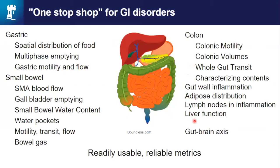As a one-stop shop, it's not just GI function — we can measure distribution in the small bowel, look at the colon, look at gut wall inflammation in Crohn's disease or in response to challenges like paracetamol. We can assess fat distribution, lymph nodes in inflammation, gut-liver function, and of course the gut-brain axis — fMRI of the brain in relationship to the gut. At the moment we're doing a study looking at the permeability of brain CSF function compared to the gut blood barrier.